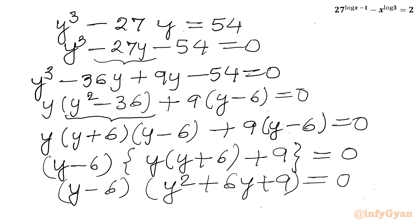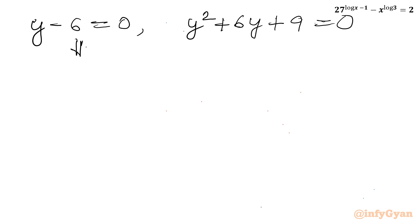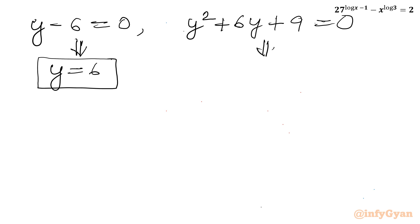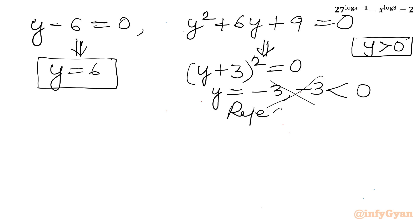Factoring out (y minus 6) gives (y minus 6)(y^2 plus 6y plus 9) equals 0. So either y minus 6 equals 0, giving y equals 6 — which is positive and real — or y^2 plus 6y plus 9 equals 0, which is (y plus 3)^2 equals 0, giving y equals negative 3. Since the condition requires y greater than 0, we reject y equals negative 3.